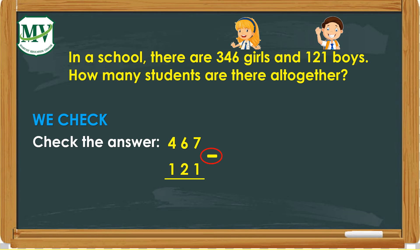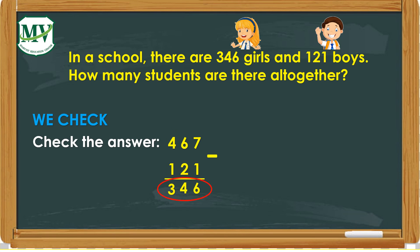So let's check the answer: 467 minus 121. Let's begin by subtracting the ones — 7 minus 1 equals 6. Let's subtract now the tens — 6 minus 2 equals 4. Now the hundreds — 4 minus 1 equals 3. 346 is the number of girls. Therefore, our answer is correct.